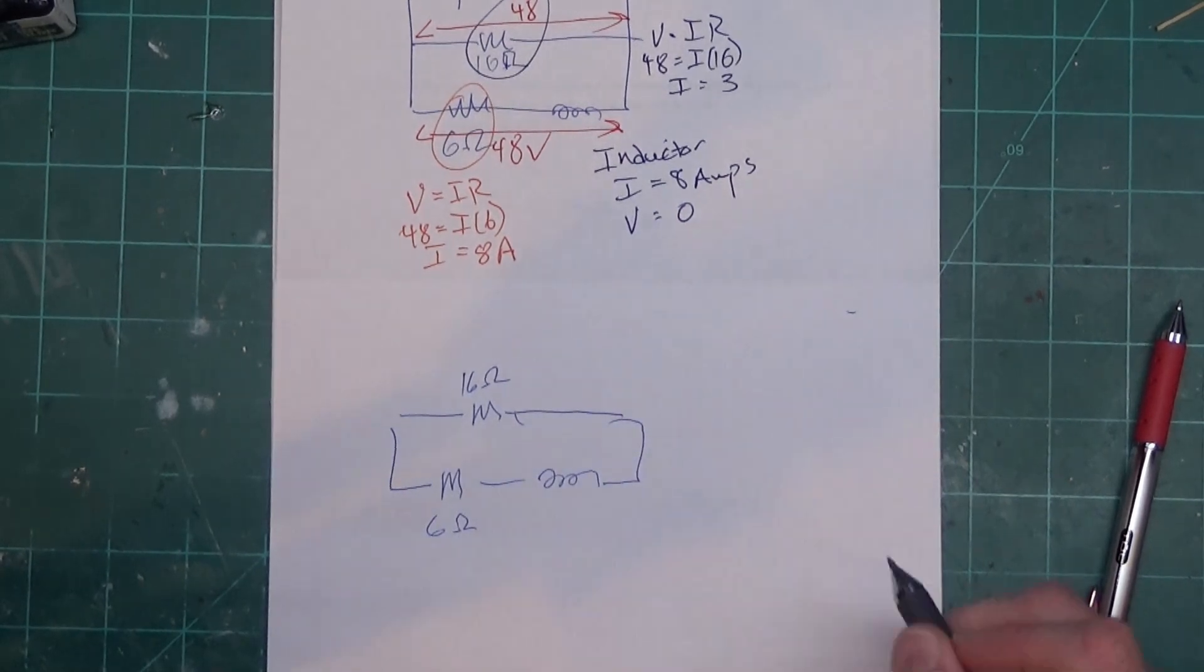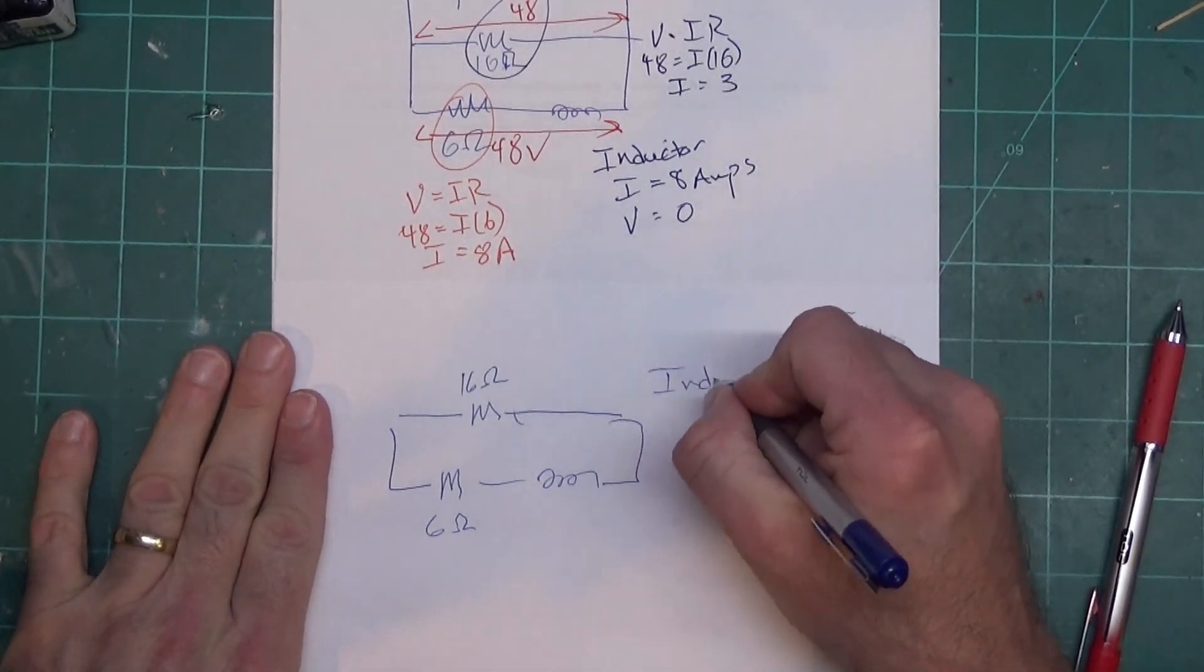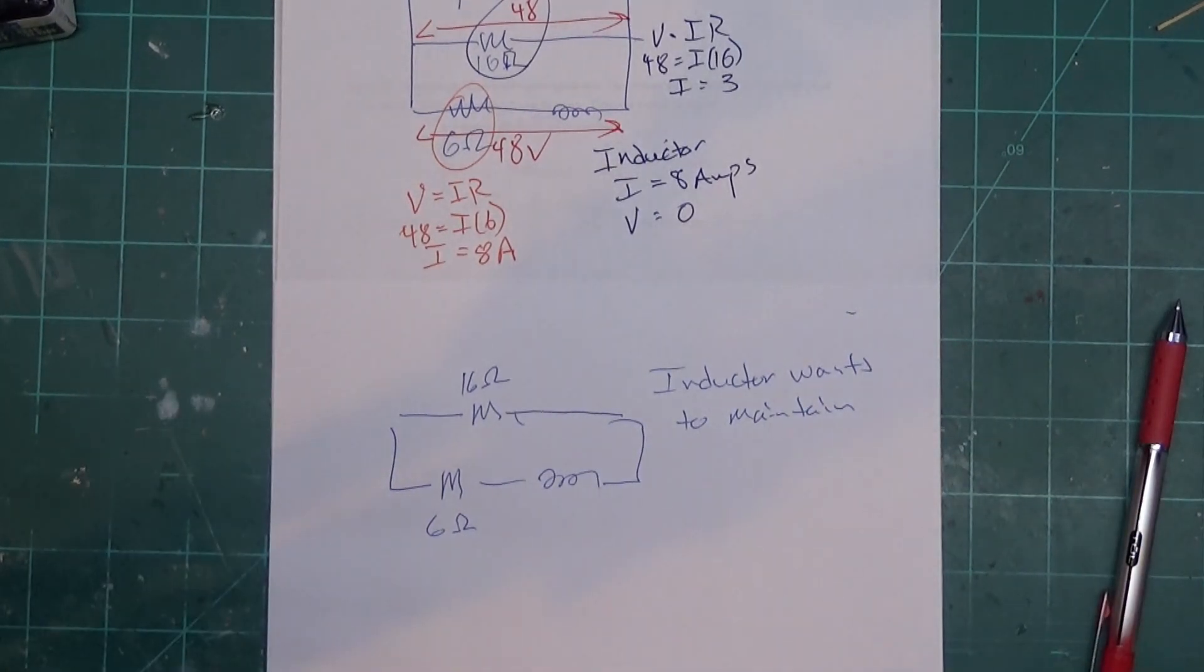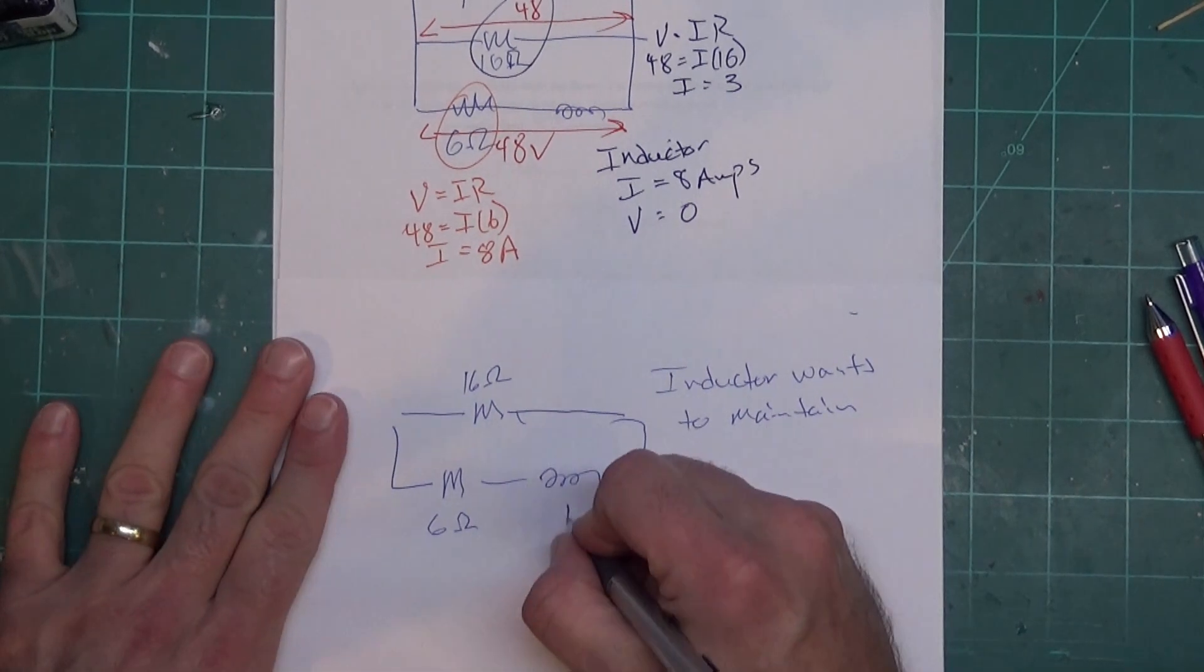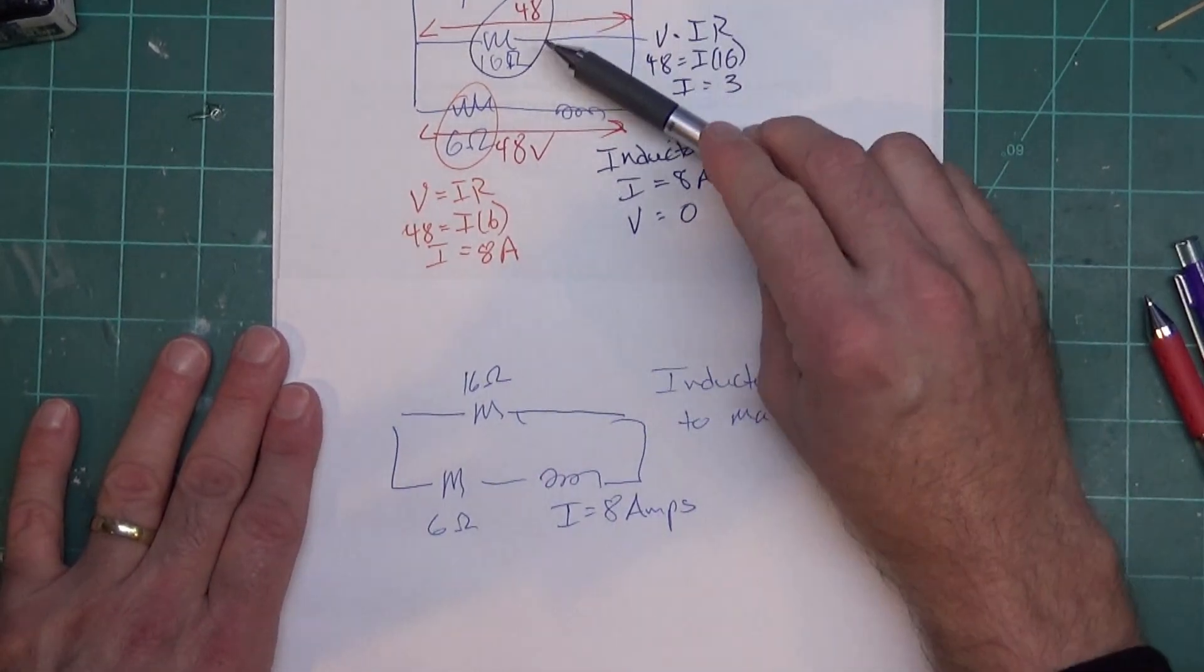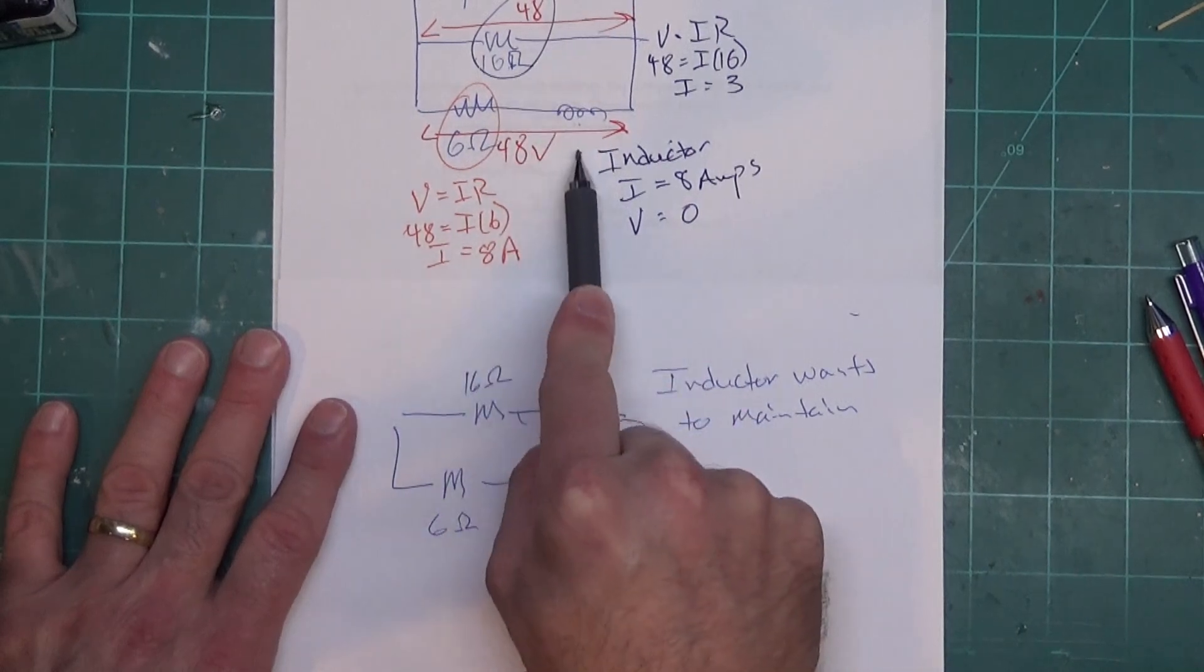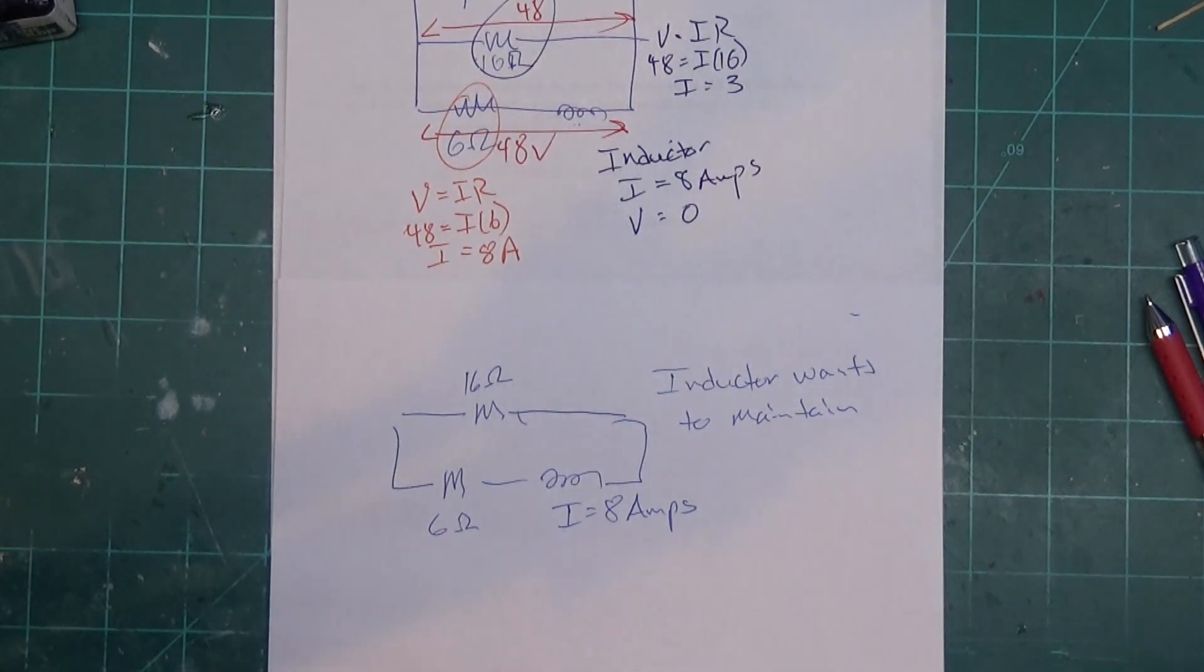Now what is the inductor going to do when that switch is first reopened? Well it's trying to maintain current. It wants to keep things the status quo. The current flowing through that inductor right when the switch was open was 8 amps. Just like it was up here, we don't use the current through this resistor, we use the current through this resistor because this is what the inductor had. It didn't have 3 amps, it had 8 amps.